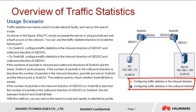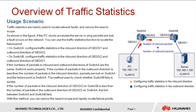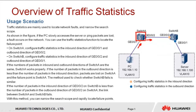On Switch A, configure traffic statistics collection in the inbound direction of GE001 and outbound direction of GE002. On Switch B, configure traffic statistics collection in the inbound direction of GE002 and the outbound direction of GE001. If the numbers of packets in the inbound and outbound directions of Switch A are the same, Switch A is working properly. If the number of packets in the outbound direction is less than the number of packets in the inbound direction, packets have been lost on Switch A — this means Switch A is the failure point.